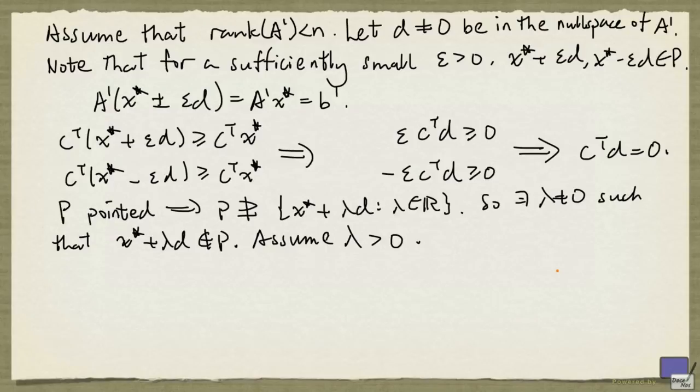So let's look at a picture of what's happening here. So say this is my x*, active at some constraints, and the vector d could look like this. So the line that we are looking at is this. And at some point on this line in the direction of d, there will be a point that is not in P.